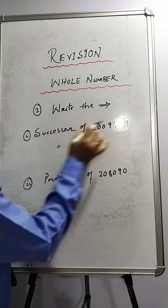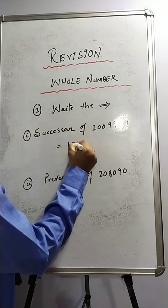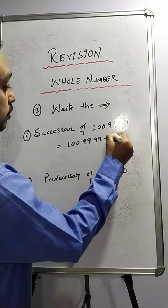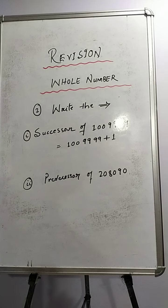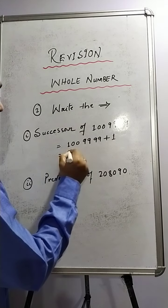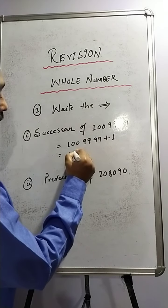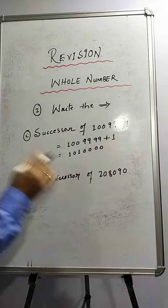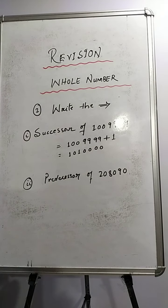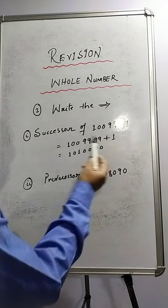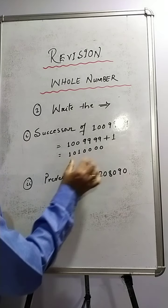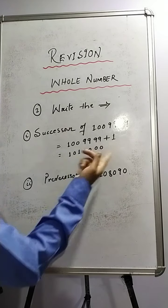So the required number — the successor of 1,00,09,999 — you add plus 1 to it. So the answer is 1,01,00,000. This is the successor of 1,00,09,999.